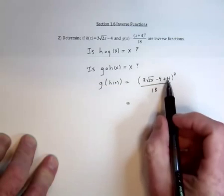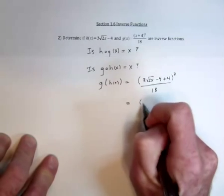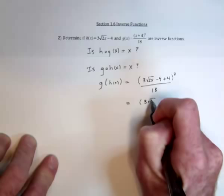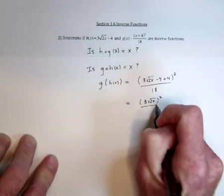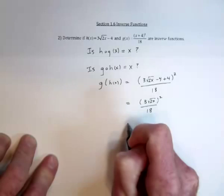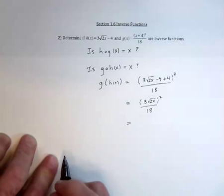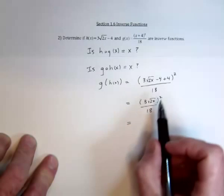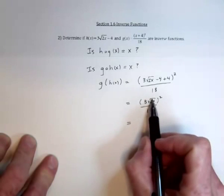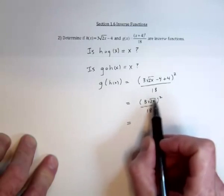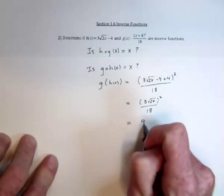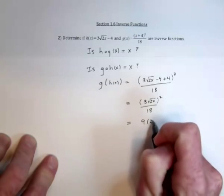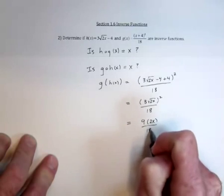So these 4's are going to cancel each other out. 3 square root of 2x is squared and divided by 18. And then square, while squaring the radical will eliminate it, but we also need to square the 3, so that's a 9. The radical is eliminated, and then it's over 18.